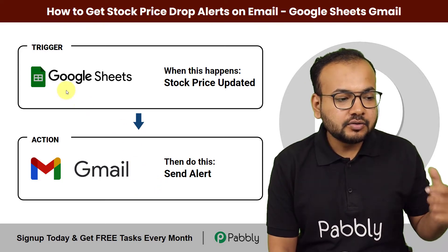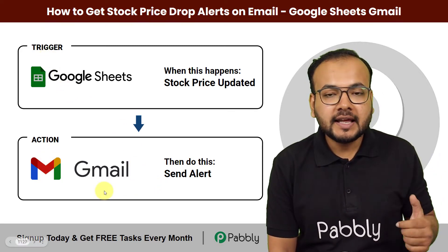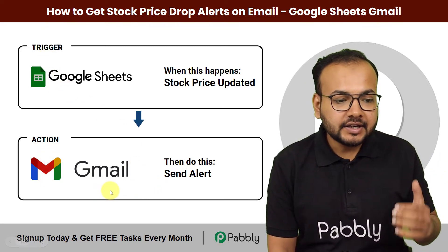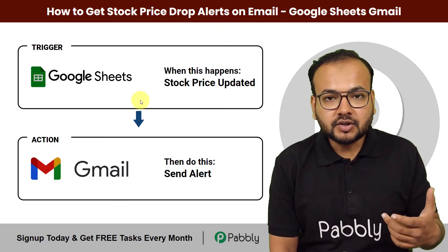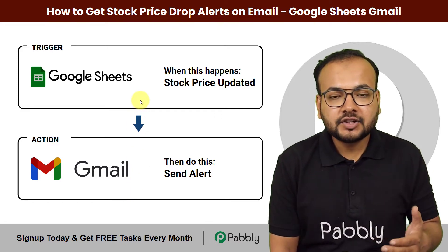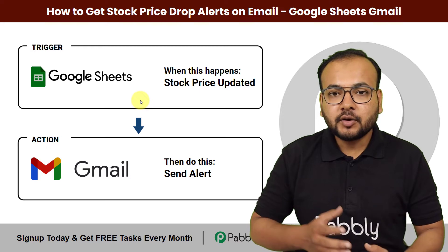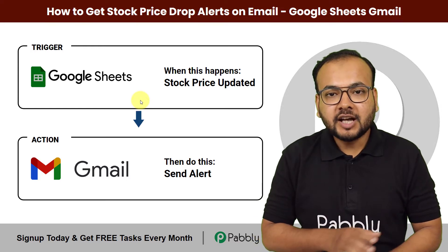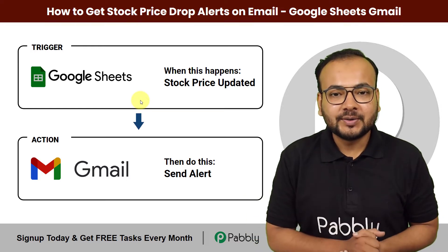We have connected Google Sheets as the trigger and Gmail as the action application, and we are going to set up this automation using Pabbly Connect, which is an automation tool — and we are going to set this up without any coding.